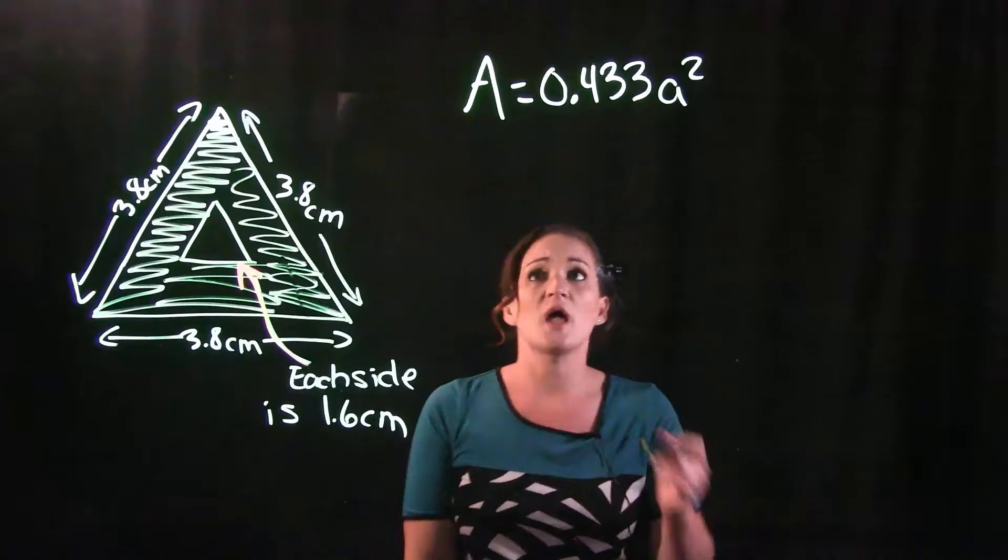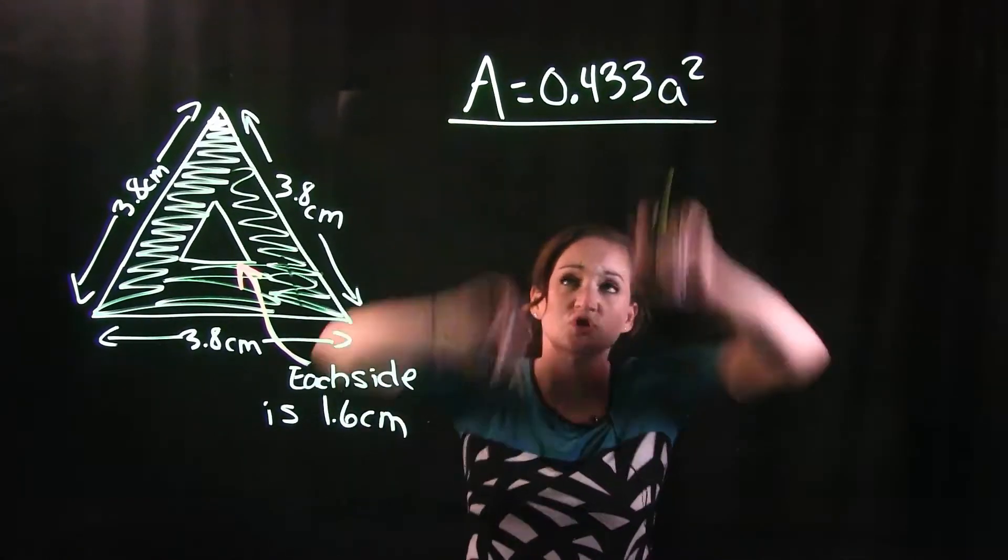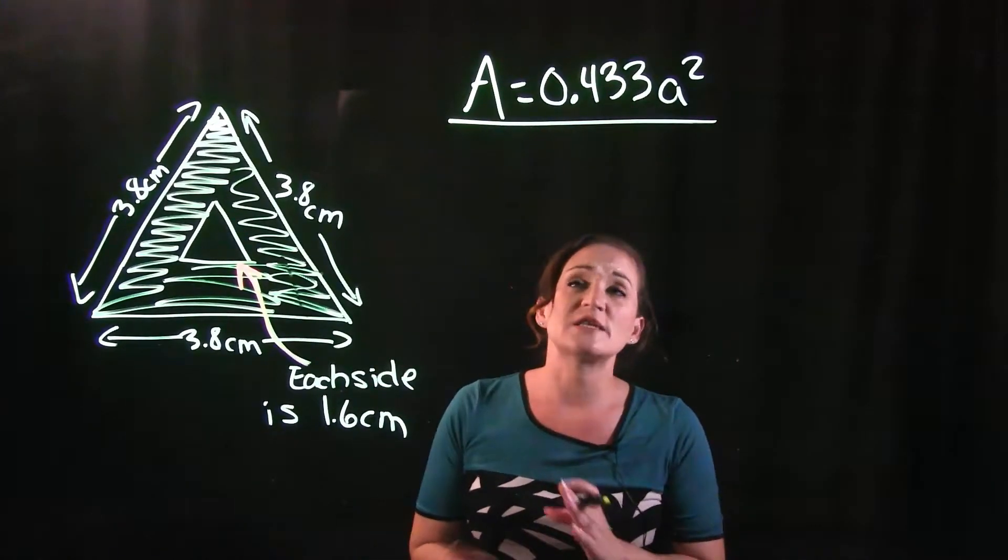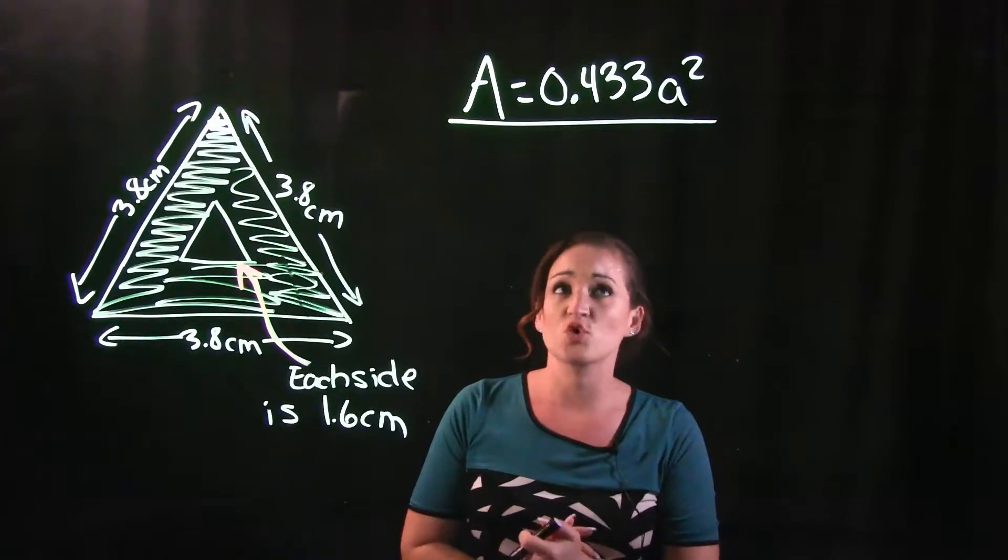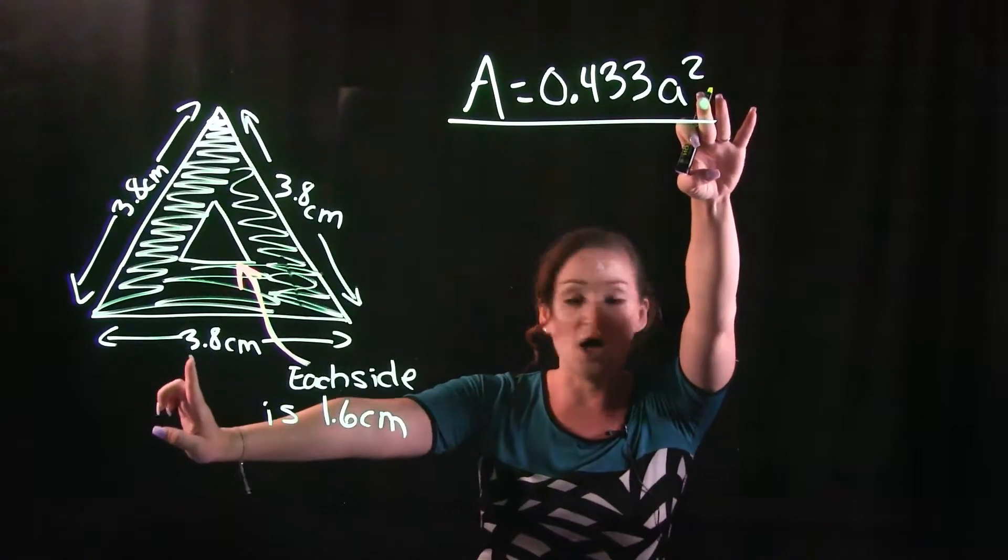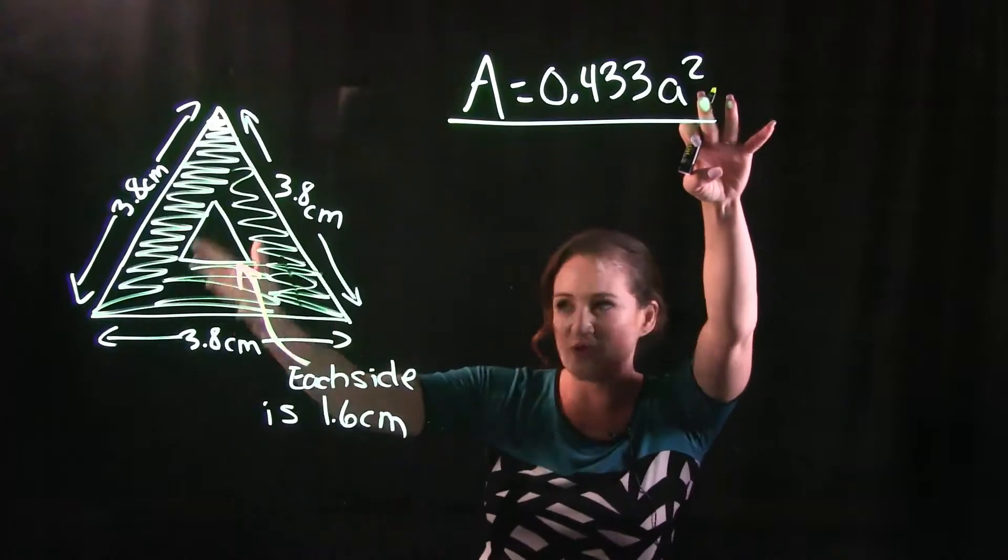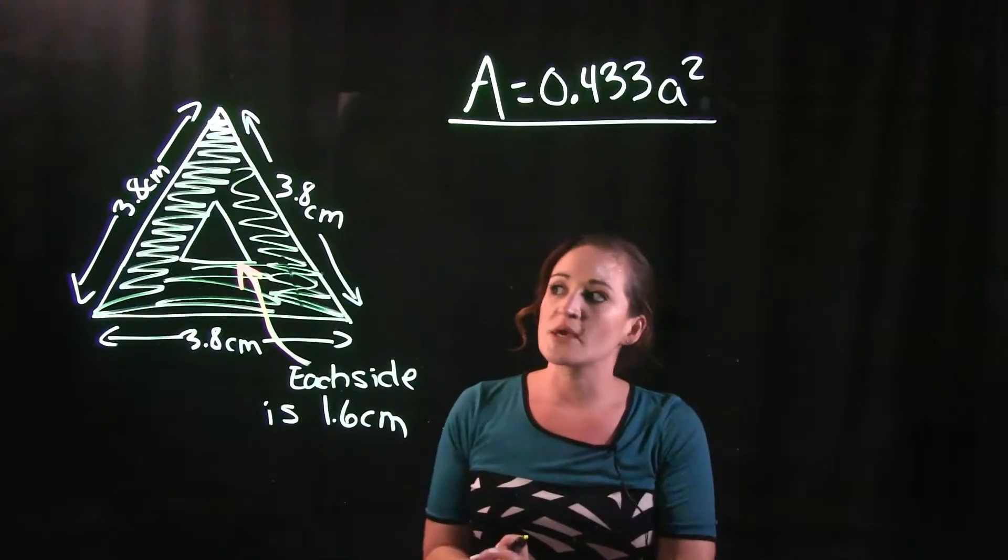I have the formula for the area of an equilateral triangle right up here. That is 0.433a squared, where a is the side of the triangle here. They're all the same. All right, so what we're going to do,